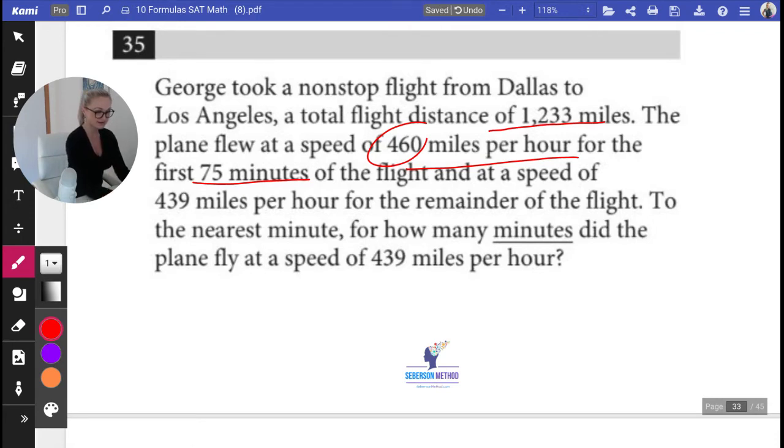And then at the speed of 439 miles per hour, slowed down a little bit for the remainder of the flight. So they're keeping it a mystery: for how many minutes, to the nearest minute, for how many minutes did the plane fly at a speed of 439 miles per hour? Easy.